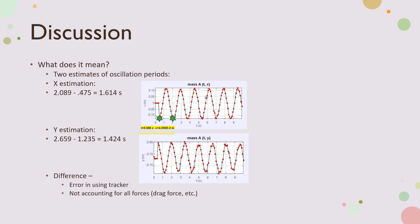And what does it mean in addition? I wanted to do two estimates of the oscillation periods based on the x and y graphs in tracker. And as you can see, I just find the period or the minimum and subtract them. So I get 1.6 seconds, 1.4 seconds. And the difference and the error in using tracker and not accounting for all forces like drag force, that's how it can be accounted for. Thank you.